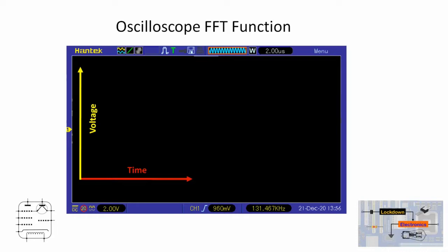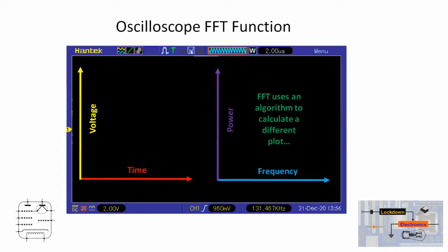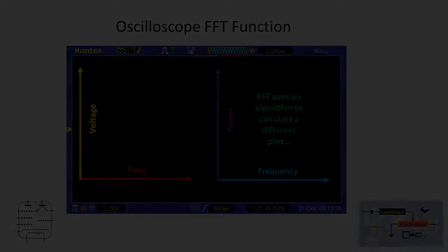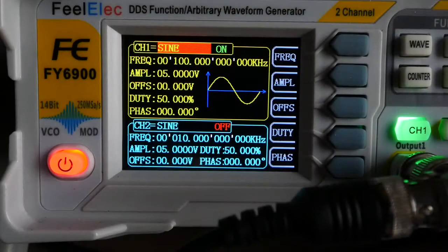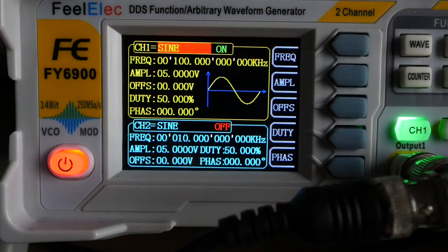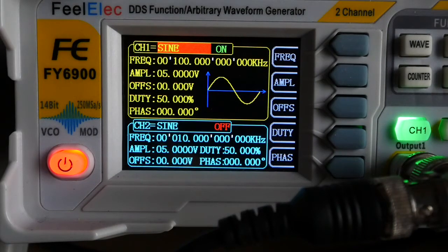The difference between an FFT display and the conventional time domain display is quite simply the FFT uses an algorithm to calculate a different plot. So what we see is a plot of frequency on the x-axis and power on the y-axis, which is a little bit like the spectrum analyzer. So let's go and have a look how that actually looks on a scope.